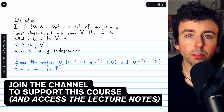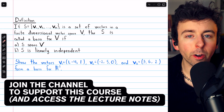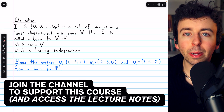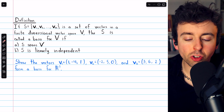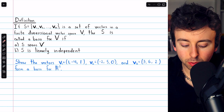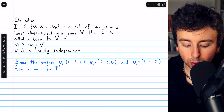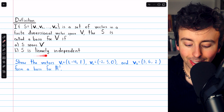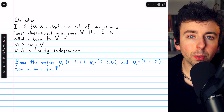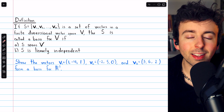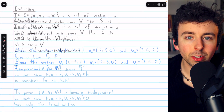To show that a set of vectors forms a basis for R³, by definition, we must show two things: we must show that the vectors span R³, and we must show the vectors are linearly independent. We're going to do two examples of showing that a set of vectors forms a basis for R³.